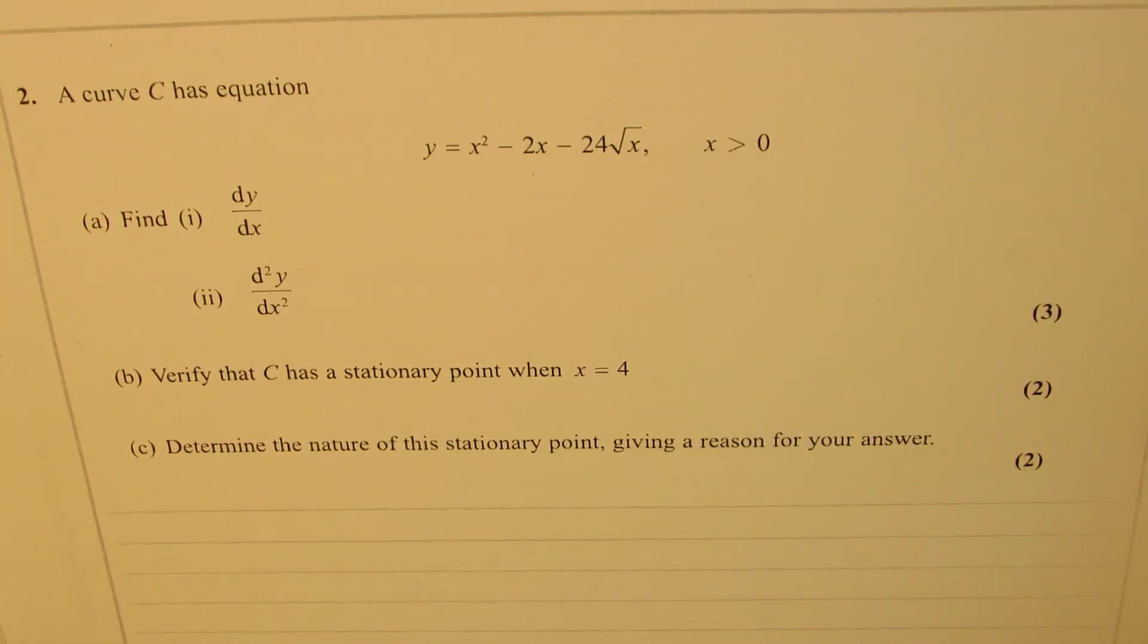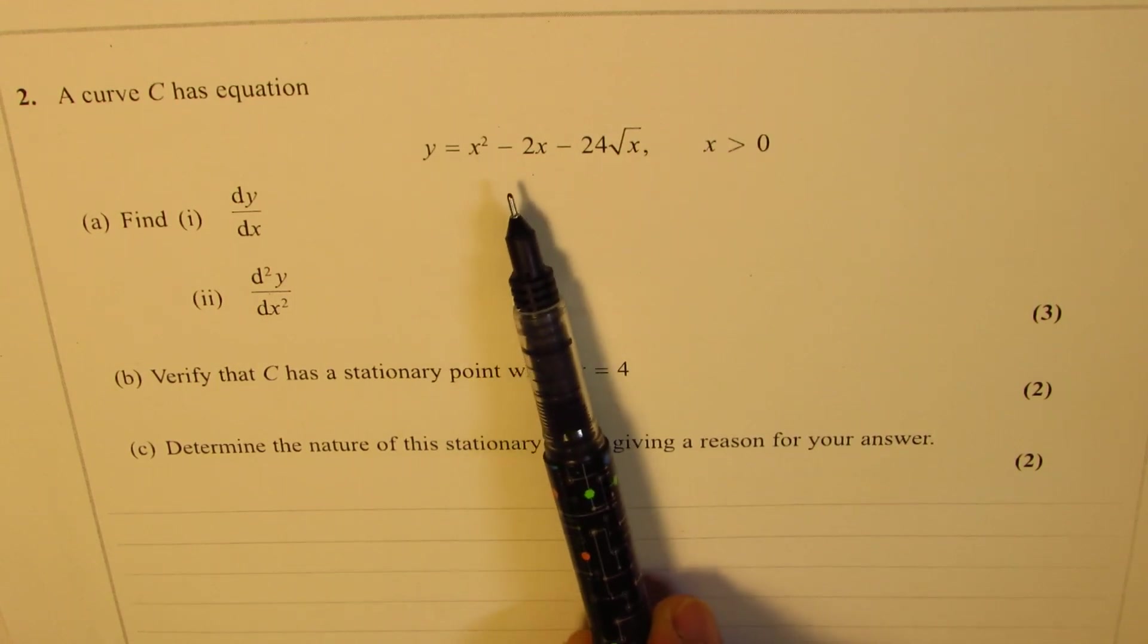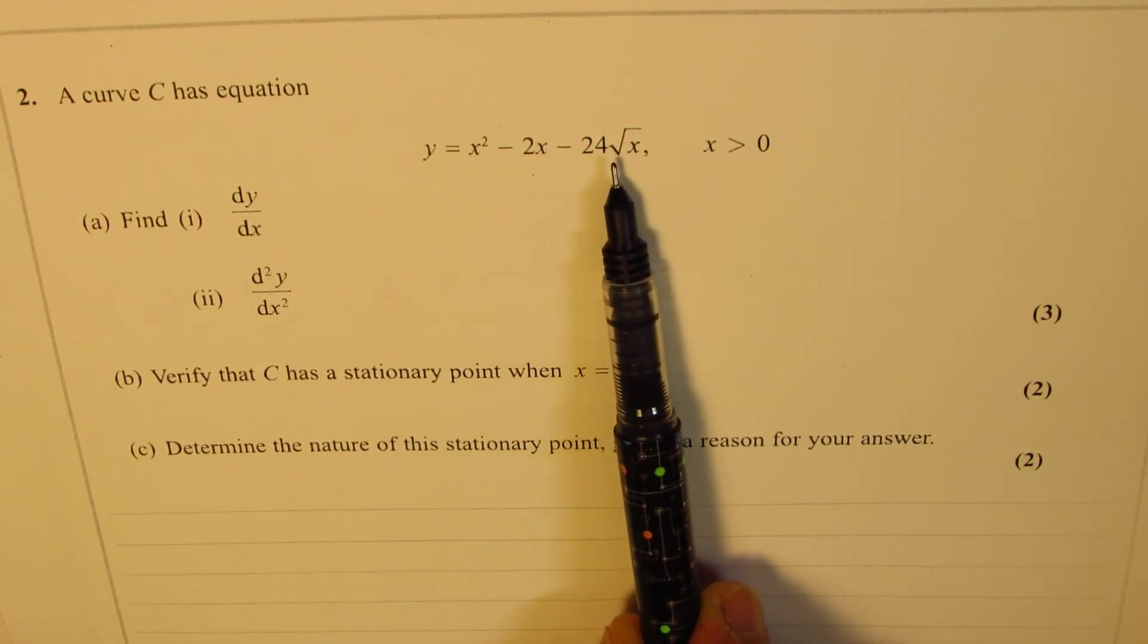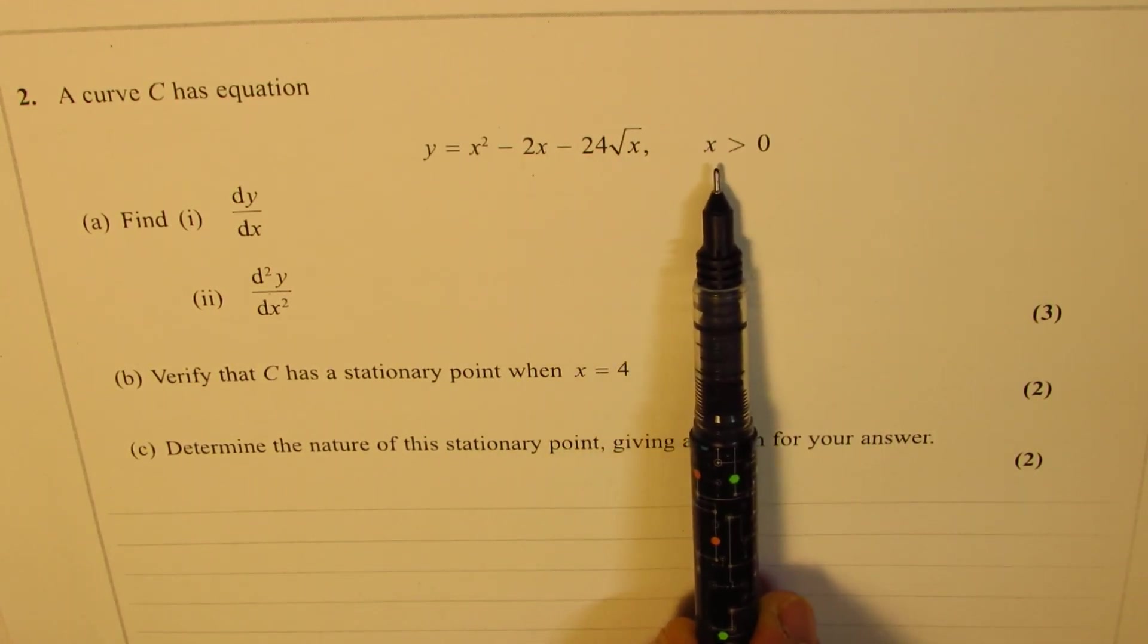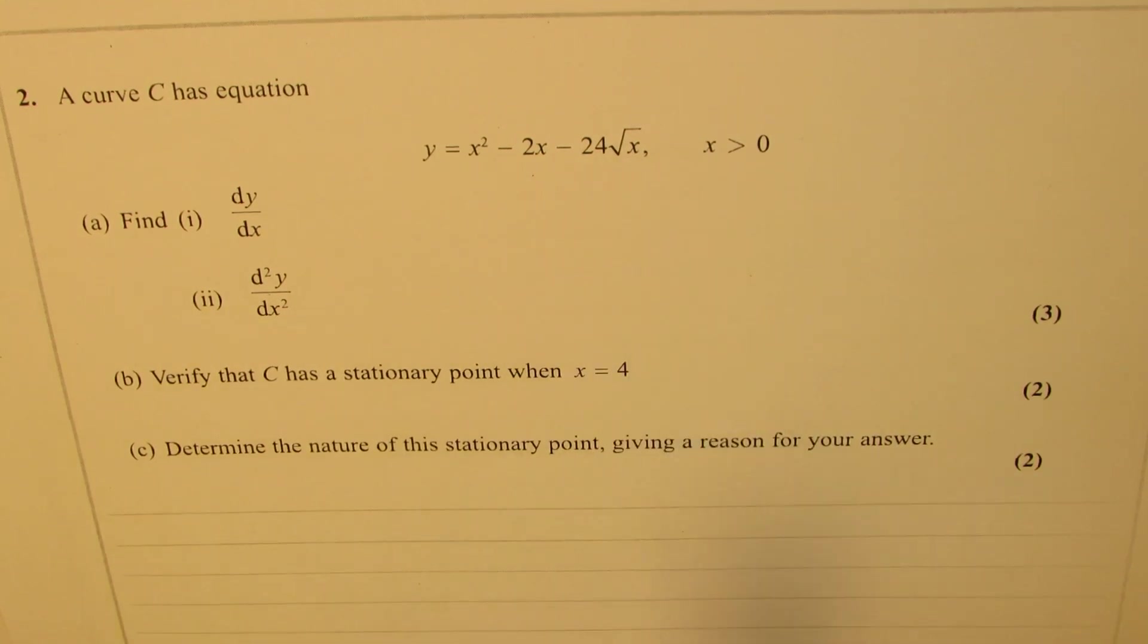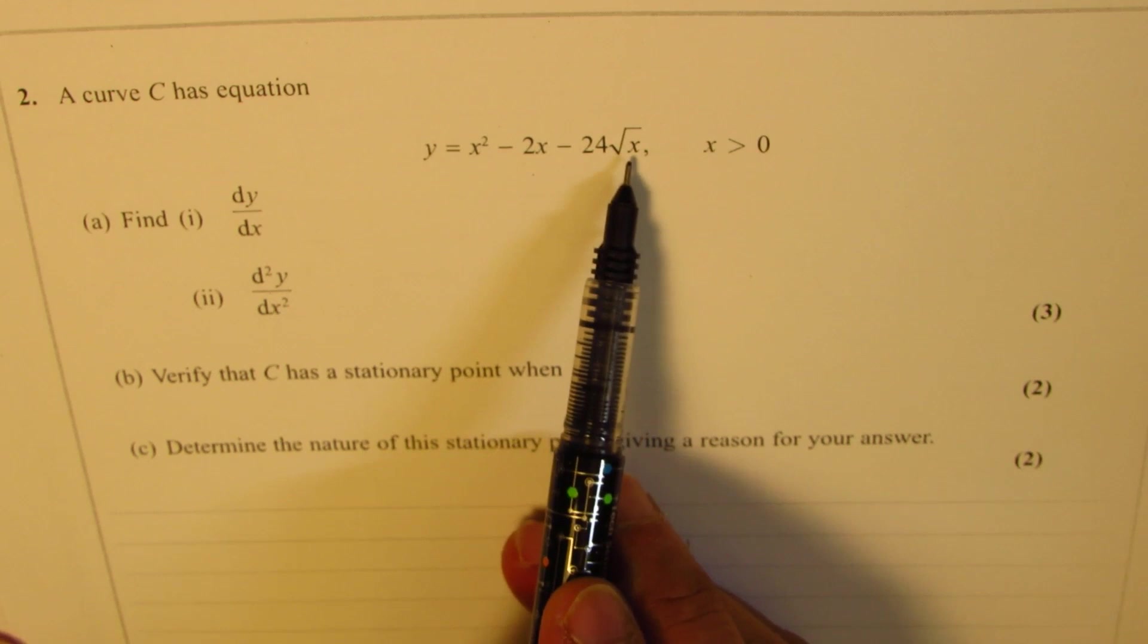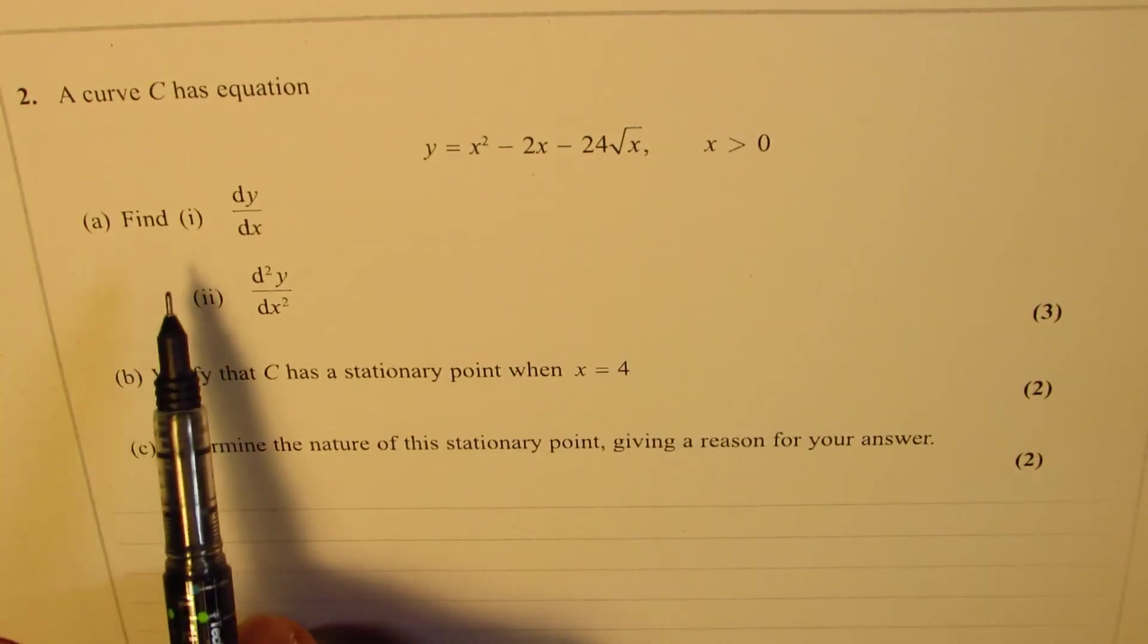A curve C has equation y equals x squared minus 2x minus 24 square root x, where x is greater than 0. Only then this square root x is valid. It could be 0 also though.